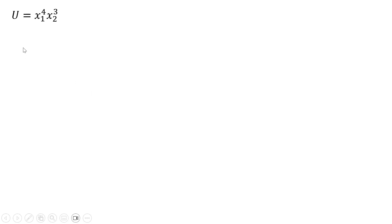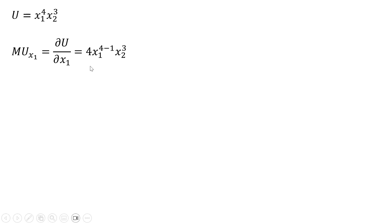We'll start with getting the marginal utility of Good 1, taking the partial derivative of the utility function with respect to x subscript 1. The exponent on the x subscript 1 variable comes down in front — that's where the 4 is coming from — and then we subtract 1 from that exponent. Simplifying that up, here is the marginal utility of Good 1.